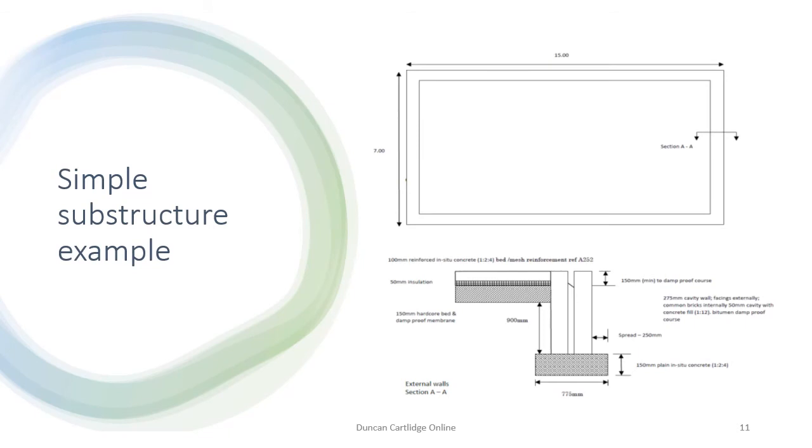So here are the details of a simple foundation using a traditional strip foundation. Note the weak mix concrete cavity filling. This is used to prevent any water that ends up in the cavity from running to the base of the foundations and causing problems. The top surface of the cavity filling slopes to the external skin.